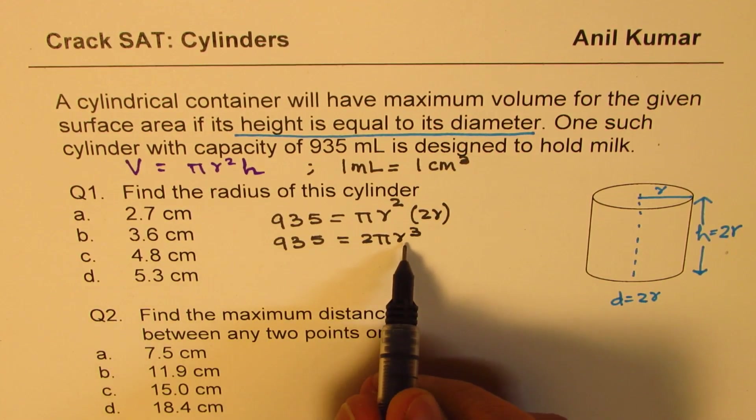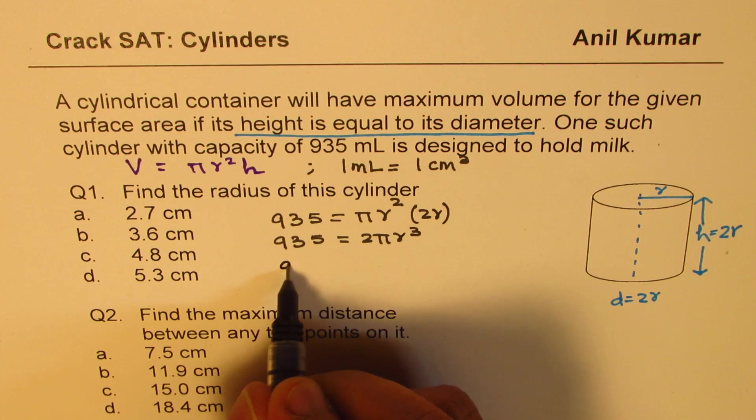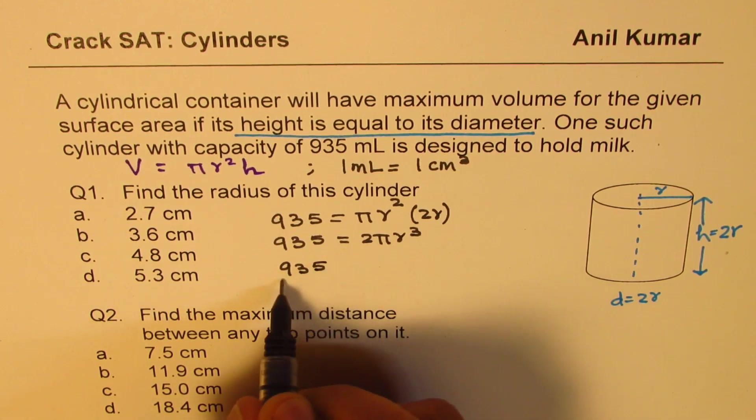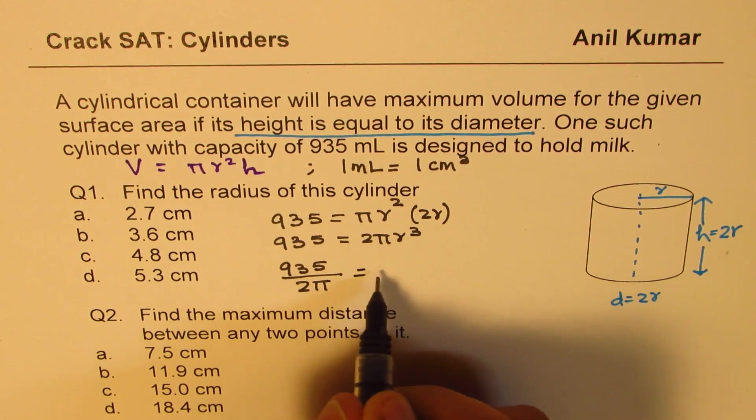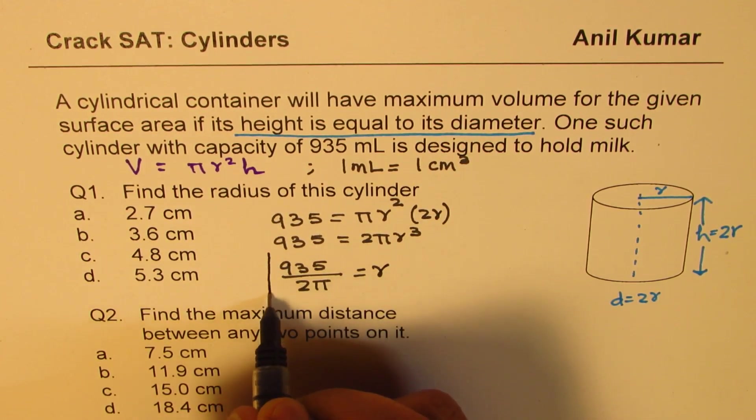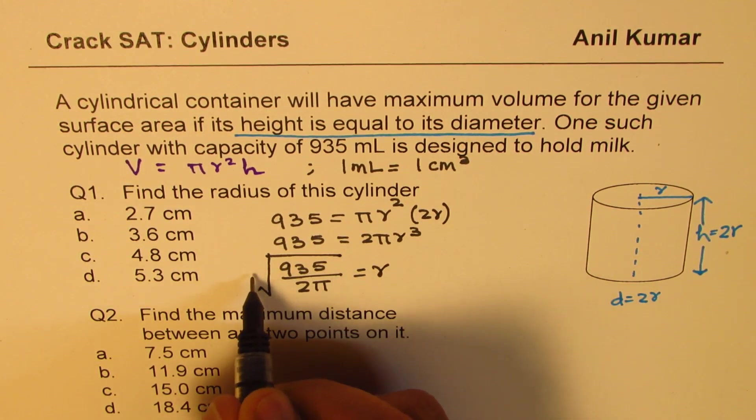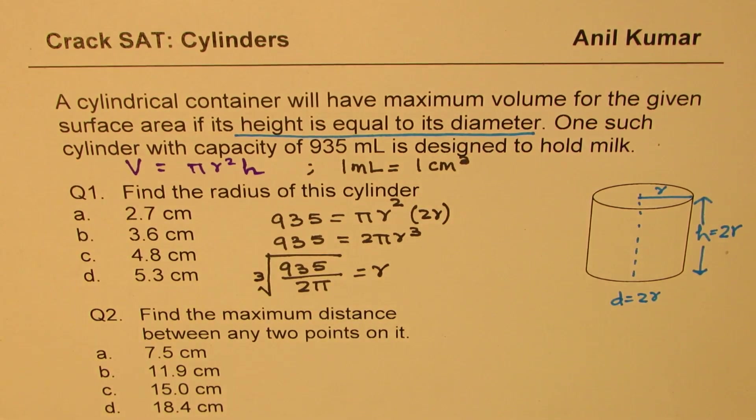From here, you can find the radius. So it will be 935 divided by 2 pi. That will give you r cubed. To find r, we have to do cube root of this expression. So that is how you're going to get the radius. Let's calculate radius now.